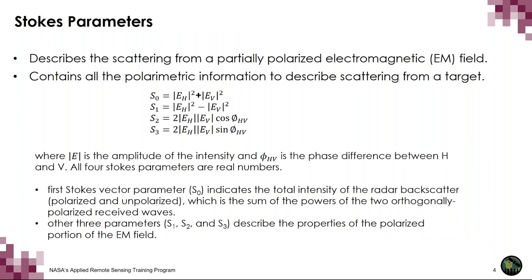We have been particularly looking at the Stokes parameters. The Stokes parameters describe the scattering from a partially polarized electromagnetic field and contain all of the polarimetric information to describe scattering from a target. There are four Stokes parameters, where modulus E is the amplitude of the intensity and phi_HV is the phase difference between H and V. All four Stokes parameters are real numbers. S0 indicates the total intensity of the radar backscatter — both polarized and unpolarized — being the sum of the powers of the two orthogonally polarized received waves. S1, S2, and S3 describe the properties of the polarized portion of the electromagnetic field.